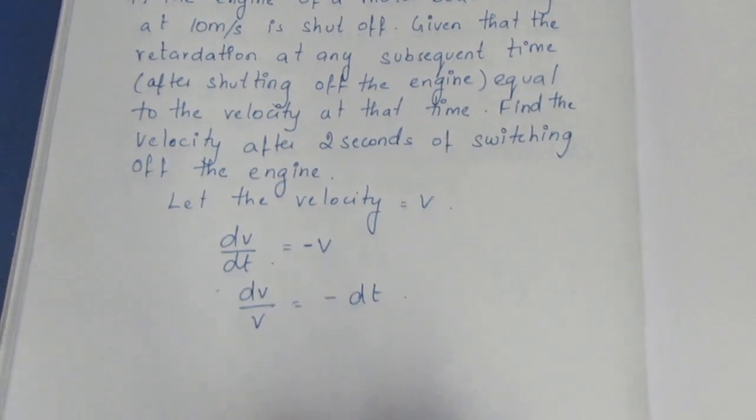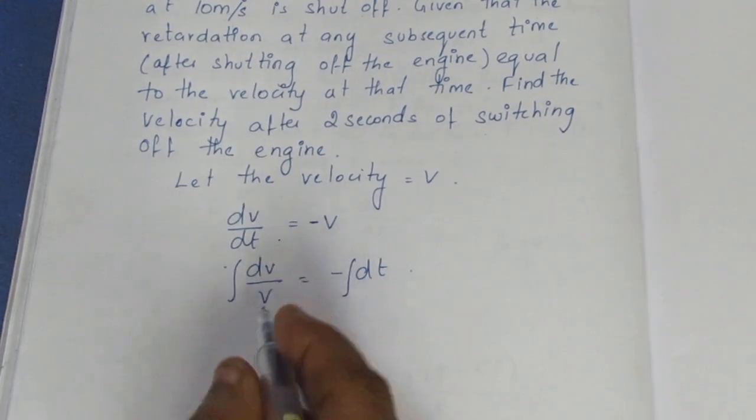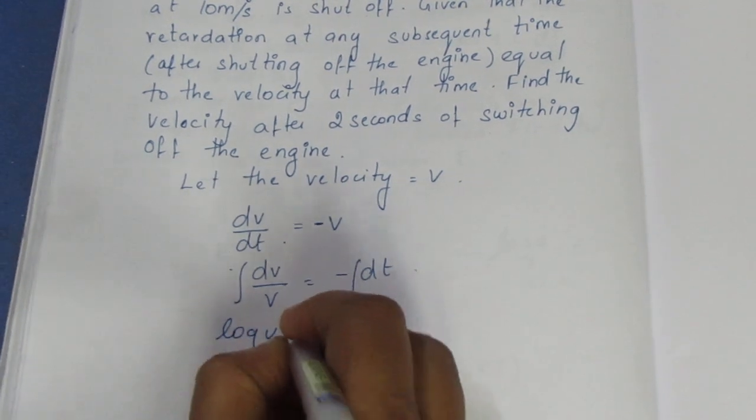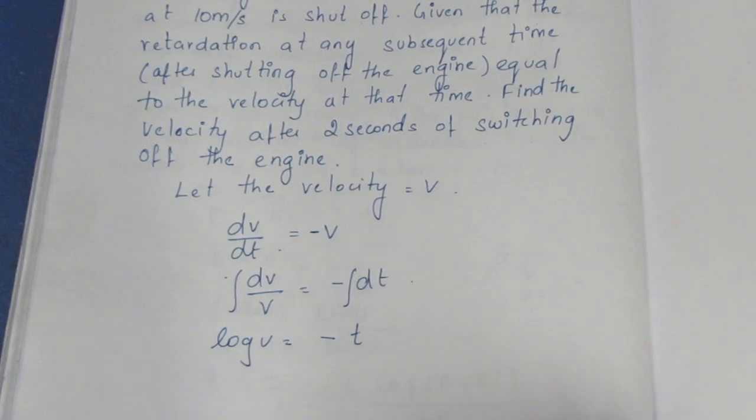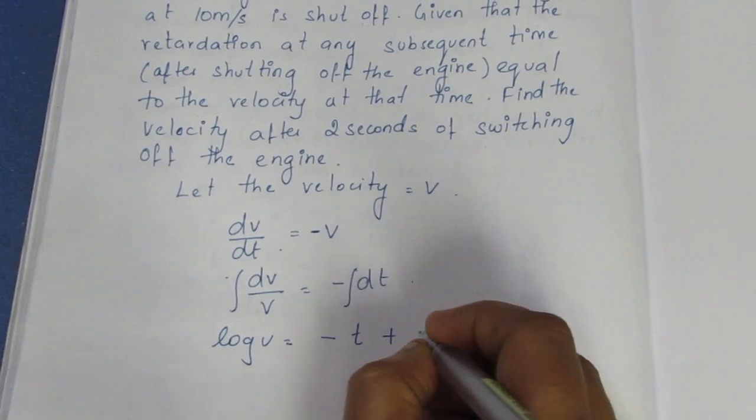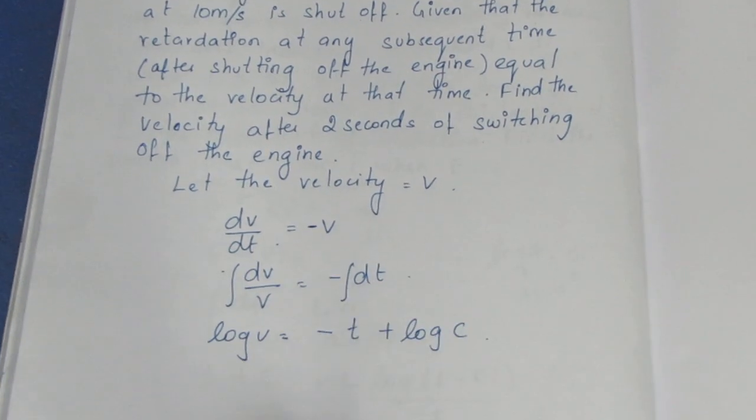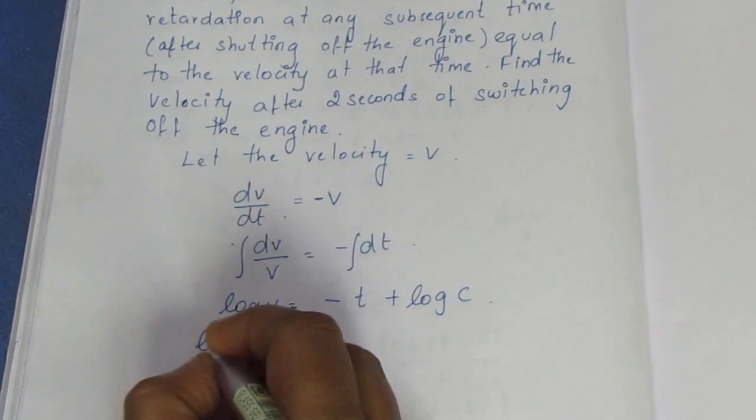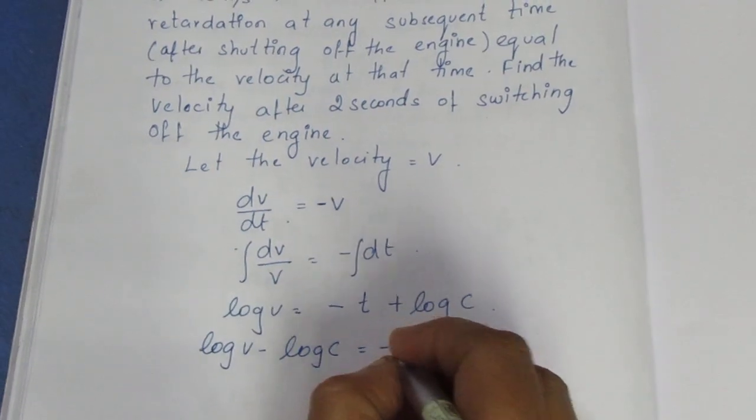Now when we integrate both sides, one by x integrates to log x, so one by v integrates to log v. Minus integration of dt equals t plus c. If we have log on this side, then we put log c on the other side.